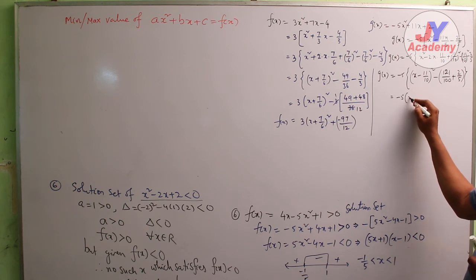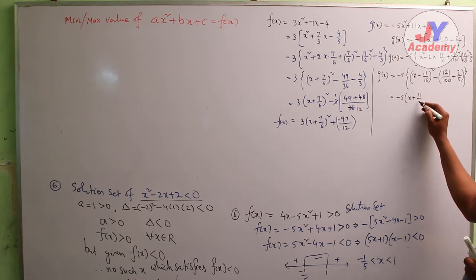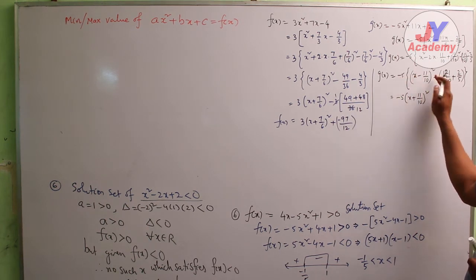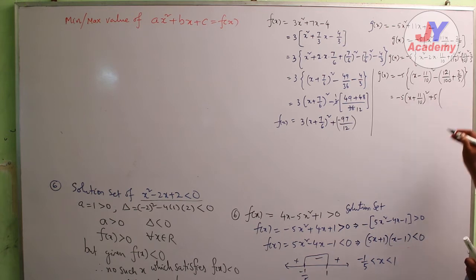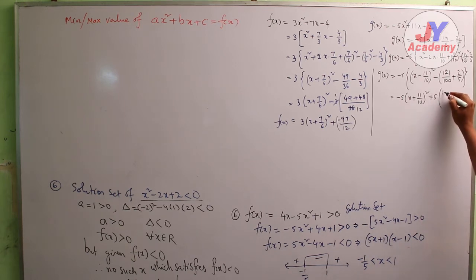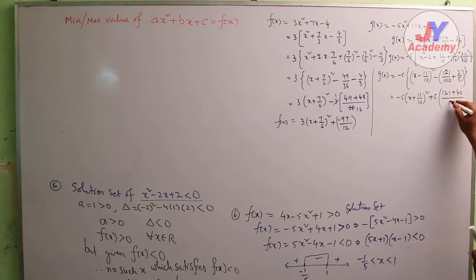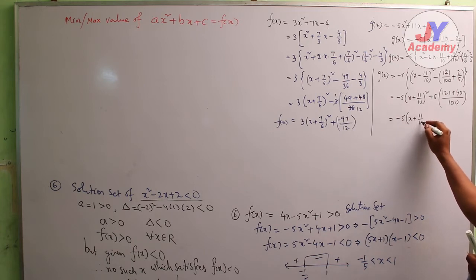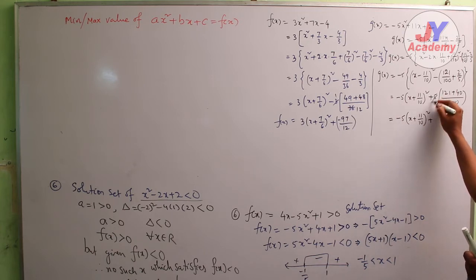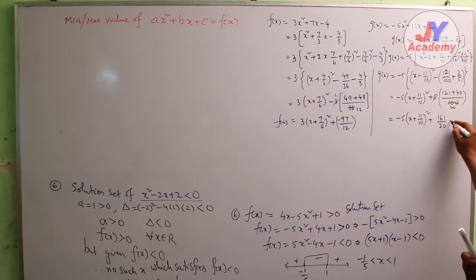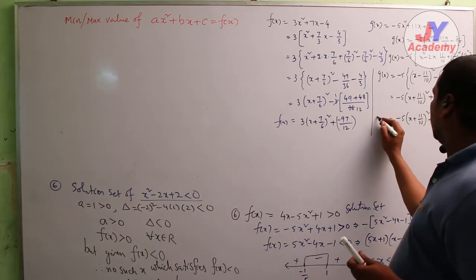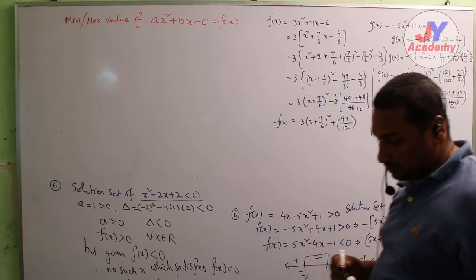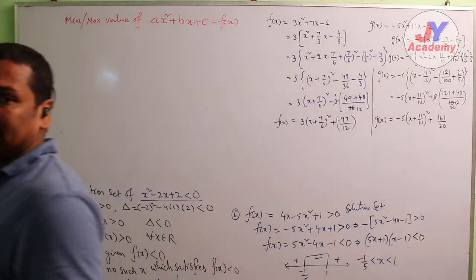So g(x) is equal to minus 5 into [x minus 11/10]² minus 121/100 plus 2/5, which simplifies to minus 5 into [x minus 11/10]² plus 161/20. So this is g(x).